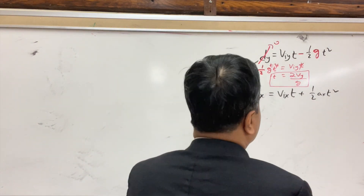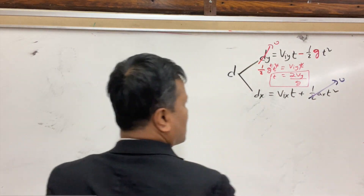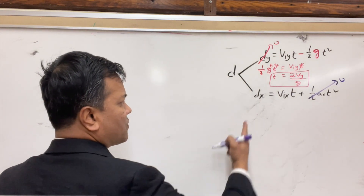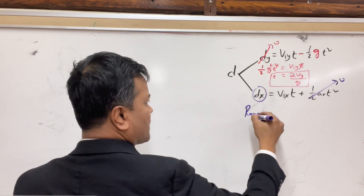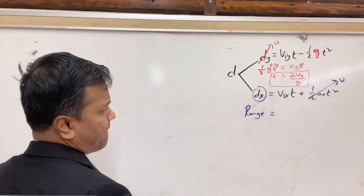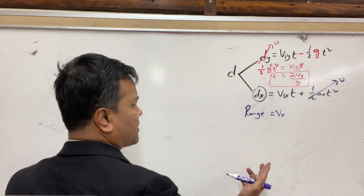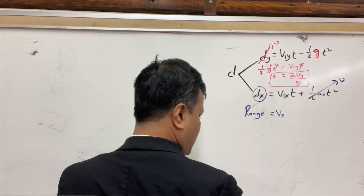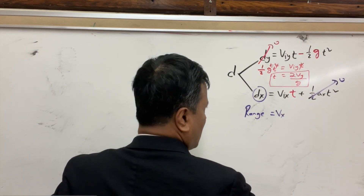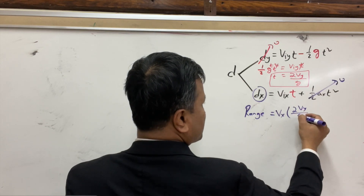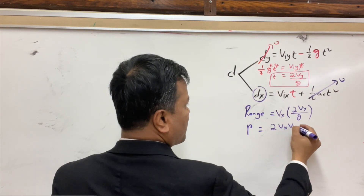Now using the x-direction: acceleration due to gravity is 0, so dx becomes range. Replace dx with range, vix with vx, and substitute t with 2vy over g. So the range formula becomes: Range equals 2·vx·vy over g.